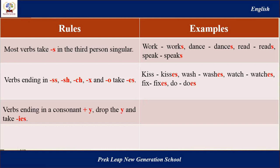Rule number three: verbs ending in a consonant plus -Y — we delete the Y and add -IES. For example: study becomes studies, fly becomes flies, cry becomes cries, copy becomes copies.